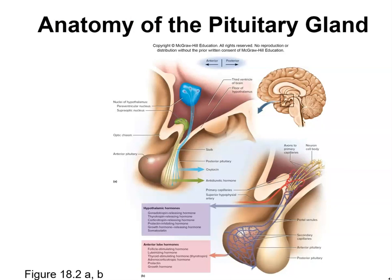The pituitary gland has an anterior and a posterior portion. Hypothalamic hormones include gonadotropin-releasing hormone, thyrotropin-releasing hormone, corticotropin-releasing hormone, prolactin-inhibiting hormone, growth hormone-releasing hormone, and somatostatin. Anterior lobe hormones include follicle-stimulating hormone, luteinizing hormone, thyroid-stimulating hormone, adrenal corticotropin hormone, prolactin, and growth hormone.